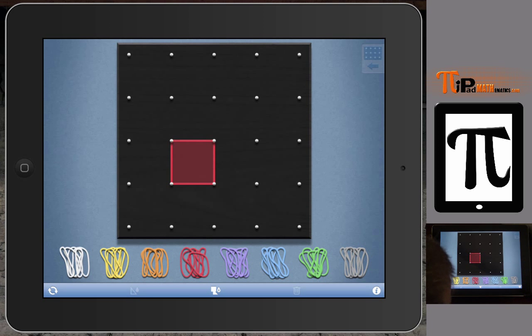And the GeoBoard, especially with this app, you can use the dynamic elements of shading it in and unshading it, and they can see, they can visually picture that space that's filled up. And when I stretch my rubber band, I can see that there's more space that's covered up, and even more space that's covered up, and even more space that's covered up.